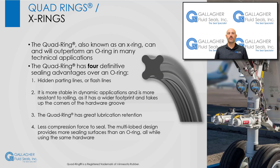An X-ring, also known as a quad ring, is a retrofit option for an O-ring and can outperform an O-ring in certain applications. The X-ring has four definitive sealing advantages over an O-ring. First, it has hidden parting lines or flash lines. The flash line on an O-ring is a line of excess material where the compression mold tool comes together and is always on the outermost diameter, which consequently is a sealing surface. On an X-ring, that flash line is in the valley between the outer two lobes, therefore it does not affect the sealing surfaces.